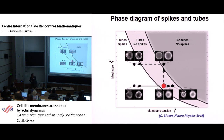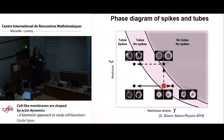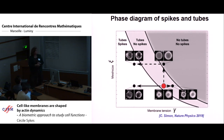As a conclusion to this part: the endocytic machinery of actin polymerization is very robust because it doesn't depend on membrane tension, whereas filopodia formation depends on membrane tension.